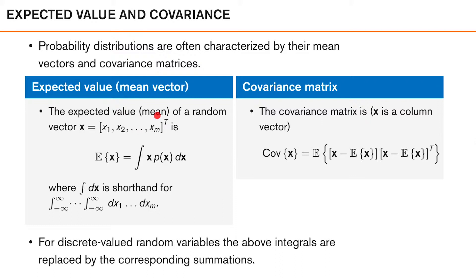The expected value or mean of an m-dimensional random vector x is defined as the expectation of x. The expectation of x is defined as an integral of the vector x weighted by the probability density of that vector. So, values of x which have high probability density will influence our expected value more than values of x which have low probability density. We often denote this mean vector as either mu or x-bar, and we call this the first moment of p of x.